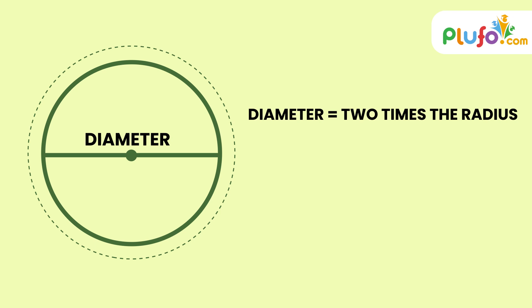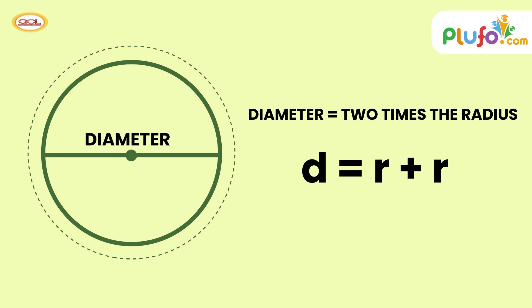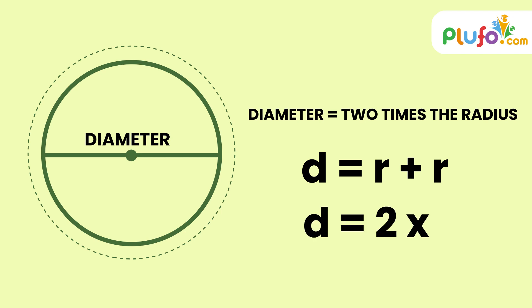So diameter is equal to R plus R, and the formula is: diameter equals 2 times R.